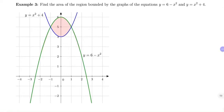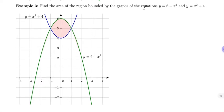Here we have another area between two curves. So we have the graph 6 minus x squared and we have x squared plus 4.